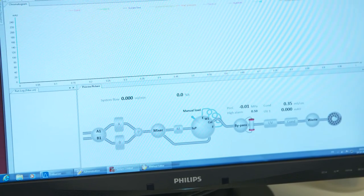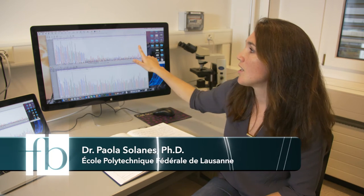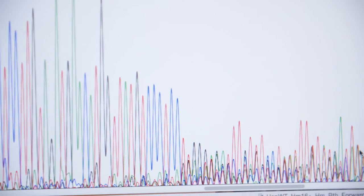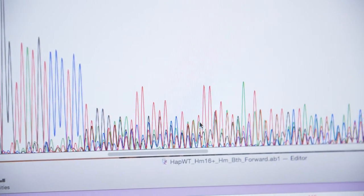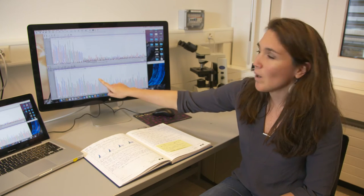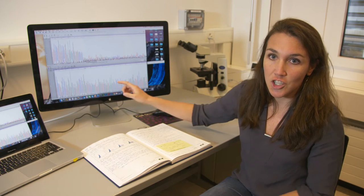So we can see here the healthy sequence of the gene, and here we see the sequence of the non-healthy gene. Here what we show is that we are able to disrupt the mutated allele, so the mutated gene, without touching the wild type allele, the healthy gene.